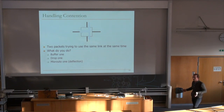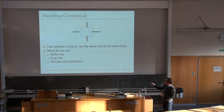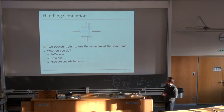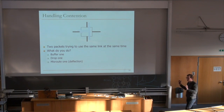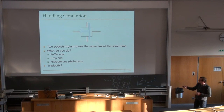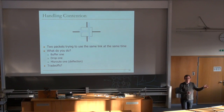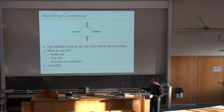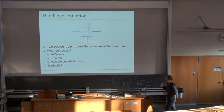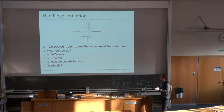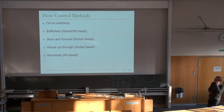A third option is deflection — sending the packet to the wrong link, also called missrouting. You send it to a non-productive output port. These are three fundamental choices: buffer, drop, or deflect. Buffering requires buffers; dropping requires communication to the sender; missrouting requires ensuring no live lock. If you do dropping or missrouting, you can get rid of buffers. You can combine these — if your buffer is full, start dropping or start missrouting.